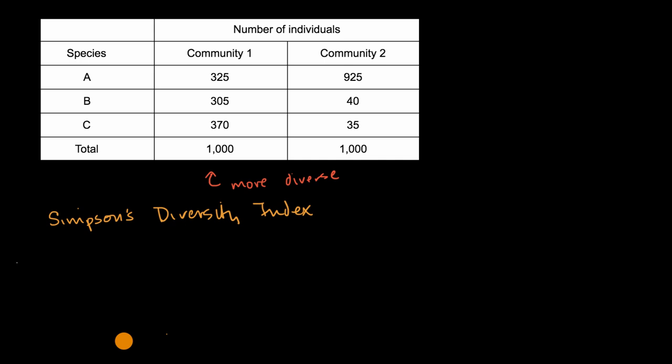And the way you calculate it, it's equal to one minus the sum of, for each species, you take the number of that species, divided by the community size, squared. So for each of the species, you do this calculation, square it, and then you add it up for each of those species.